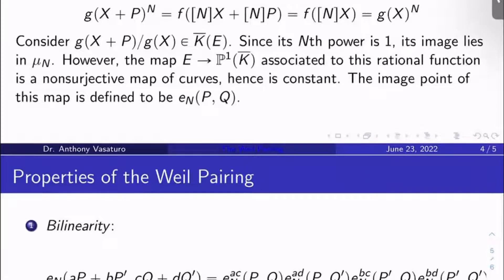Okay, but this function can be thought of as a map from E to P¹(K̄), the projective line, K̄ points. And this map, this function thought of as this map, it's a non-surjective map of curves because its image lies in μ_N. Well, by basic algebraic geometry, you've got yourself a non-surjective map of curves, right? So this map has to be actually constant. The image point of this map, which lies in μ_N, that's going to be defined to be e_N(P,Q). That is the Weil pairing.